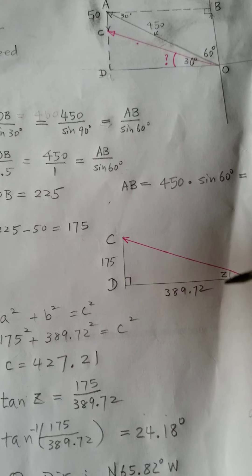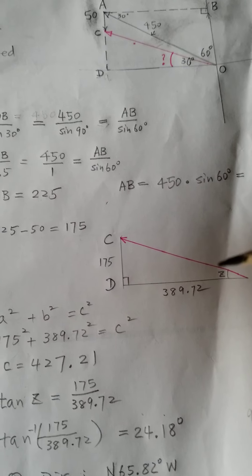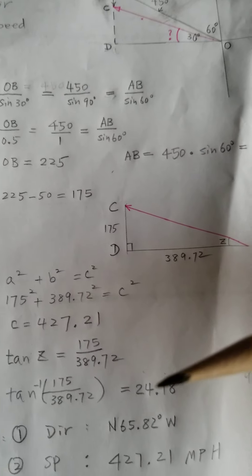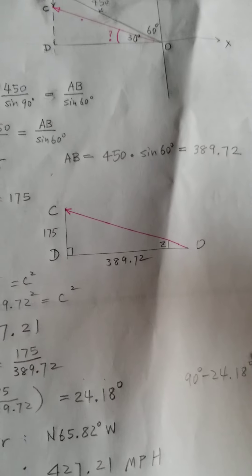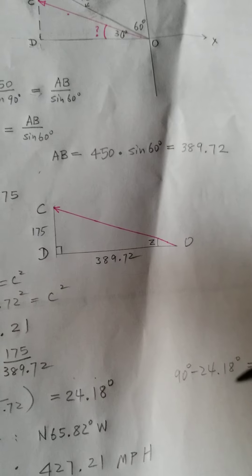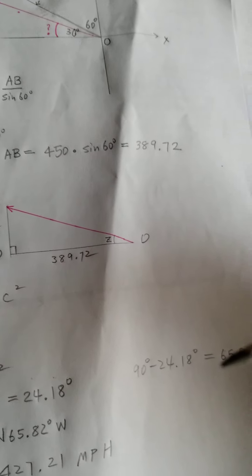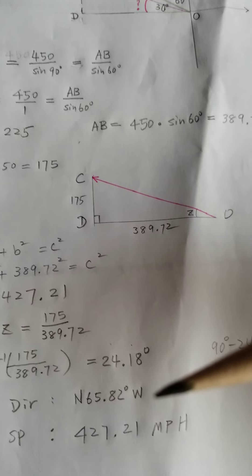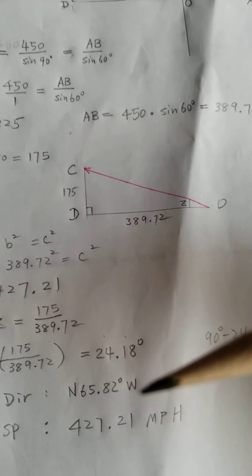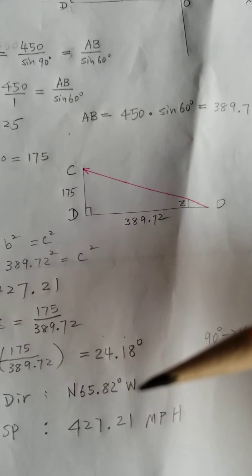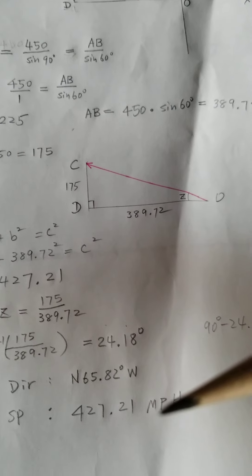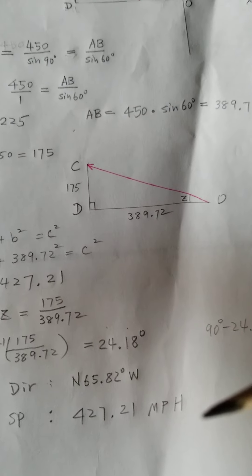But then we want the other side of 90 degrees, so just subtract: 90 minus 24.18 gives us 65.82 degrees. So the answers are: the direction changes from 60 to 65.82 degrees west — pushed back some — and the speed is also reduced to 427.21.